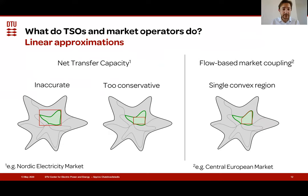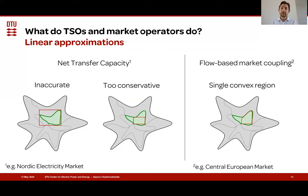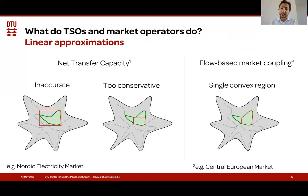What is happening at the moment for electricity markets: for example, in the Nordic market they use linear approximations based on net transfer capacity that can either be inaccurate or too conservative. In the central European market, people try to identify a single convex region and allow electricity market operating points to be inside this single convex region, disregarding parts of possible feasible operating points.